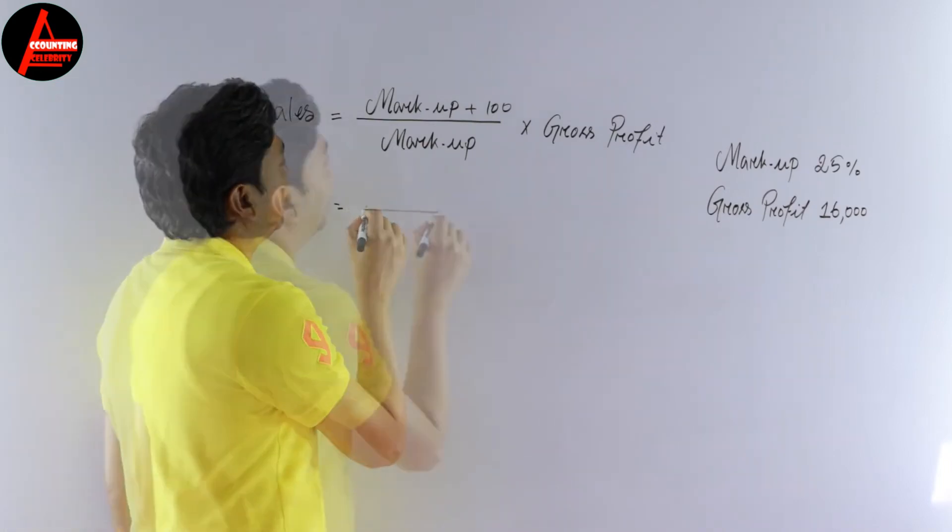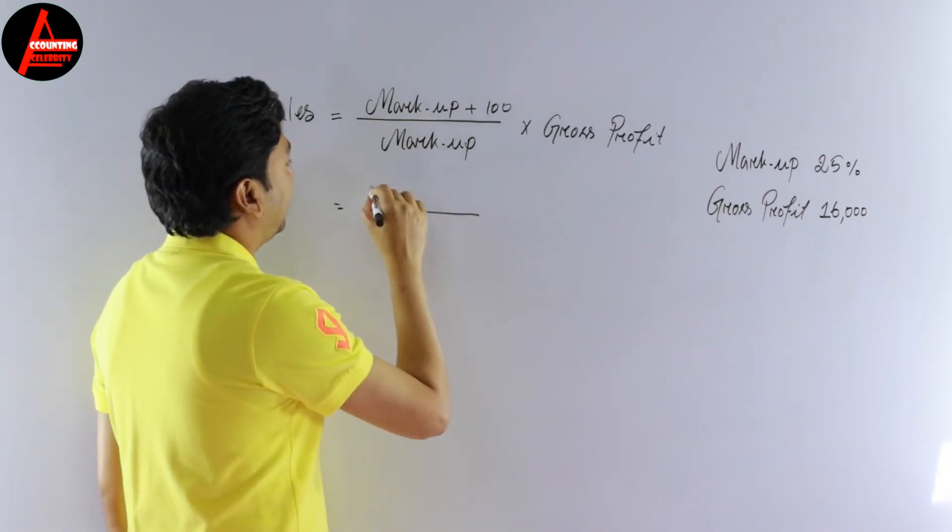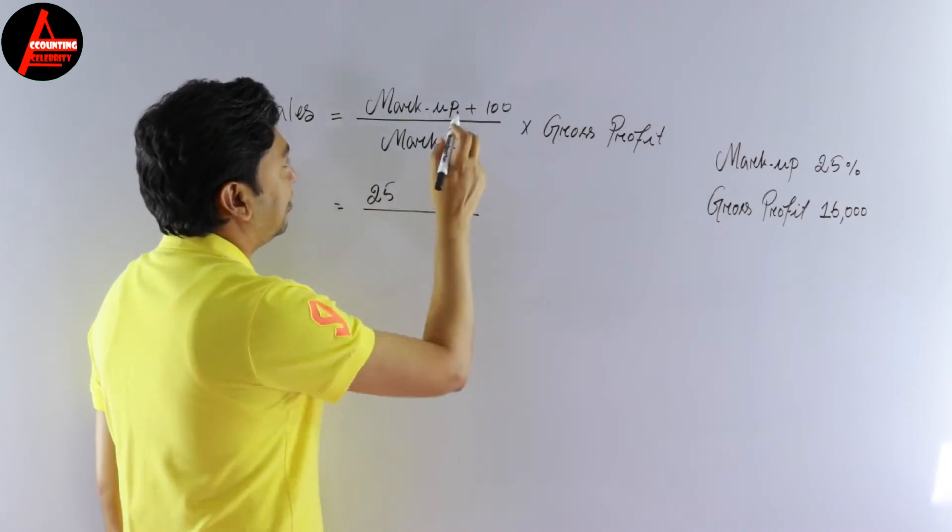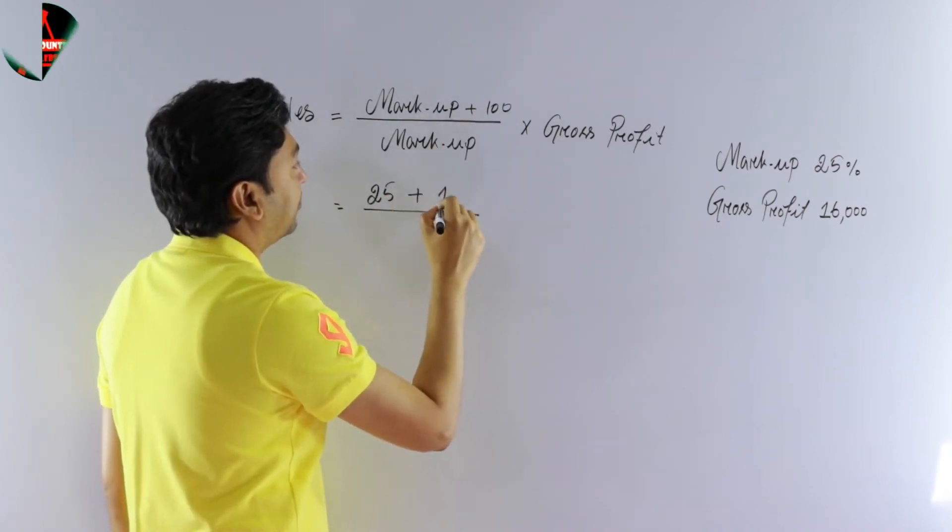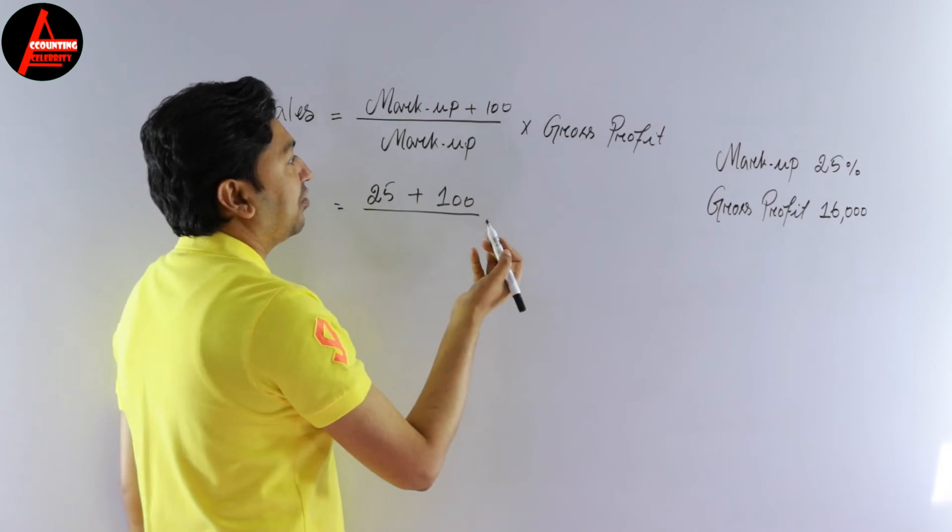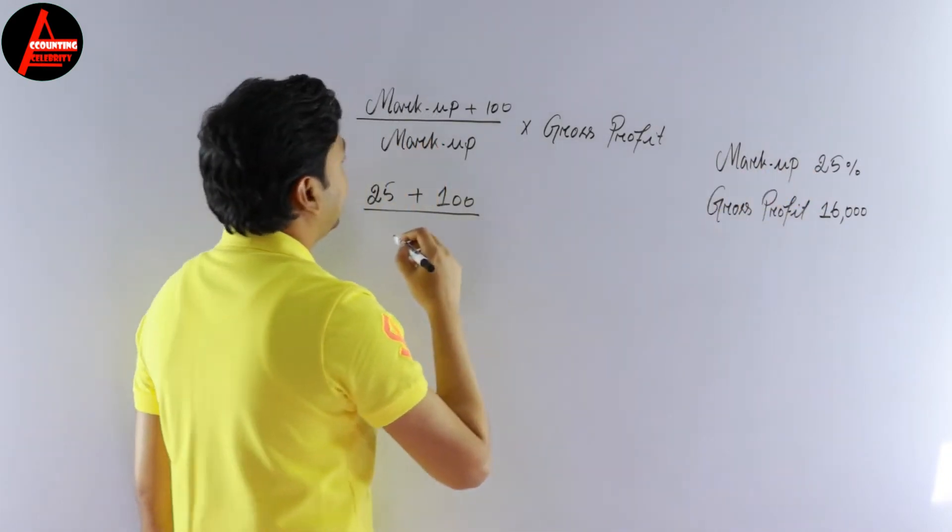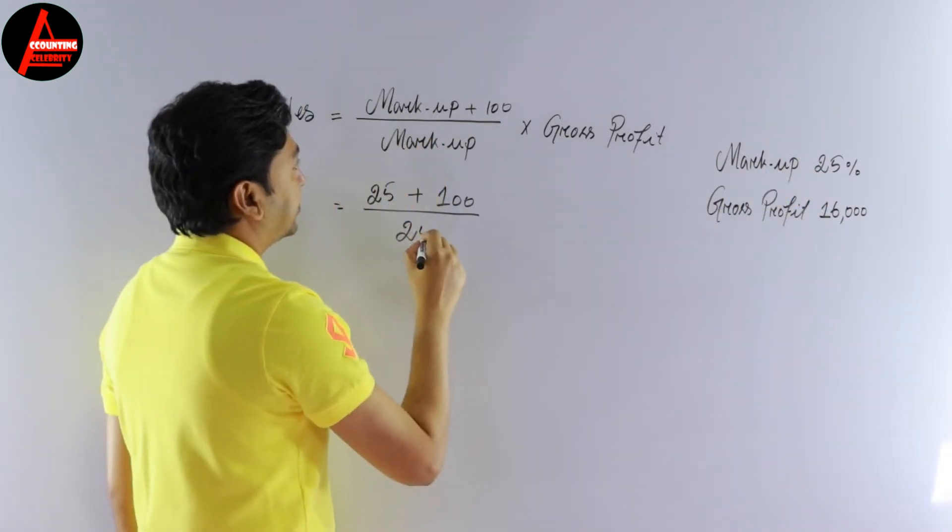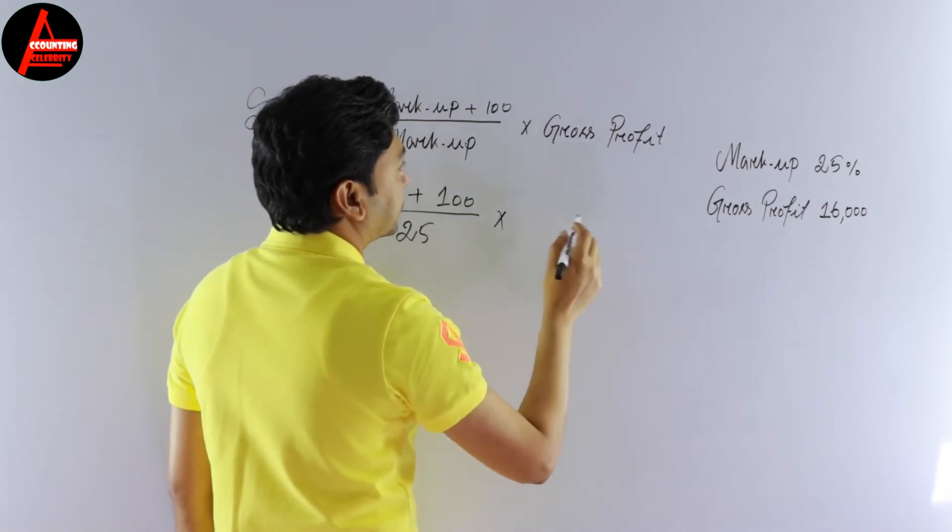Now we will apply this information on this formula to calculate sales revenue. So here our markup is in the question 25 percent, plus here in the formula we have 100. Then we have markup again which is 25 percent.